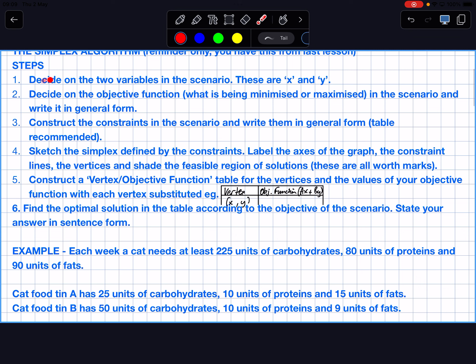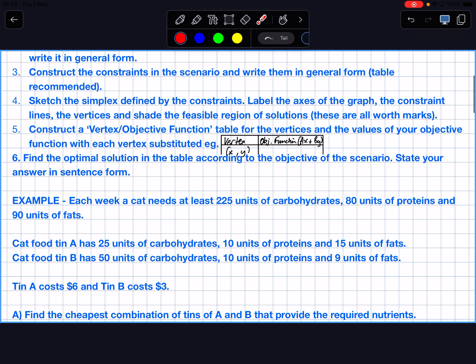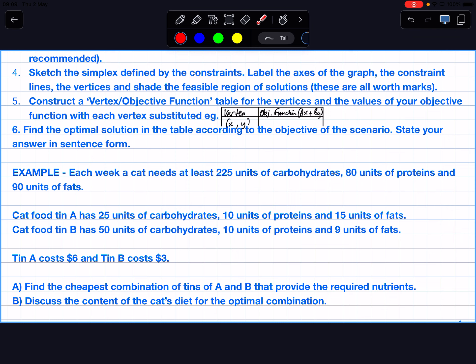Just a reminder, these are the simplex algorithm steps. Step 1, decide the two variables. Step 2, decide the objective. Step 3, draw your constraints. Step 4, sketch the simplex and color it in and label everything. Step 5, make this little table. And then step 6, find the optimal solution from the table and state the answer in sentence form.